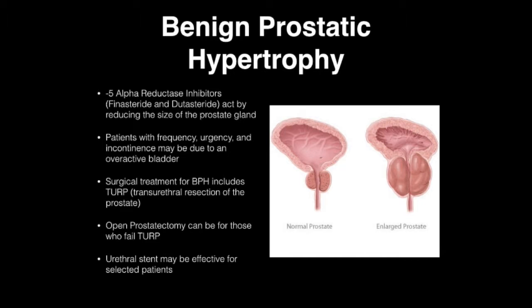A different class of agents is the 5-alpha reductase inhibitors such as finasteride and dutasteride, also known as Proscar. These work by reducing the size of the prostate gland. Patients with urinary frequency and incontinence may also have an overactive bladder, and that needs to be considered as well.